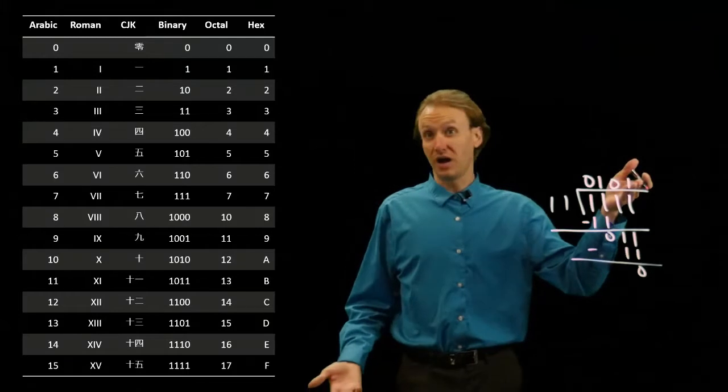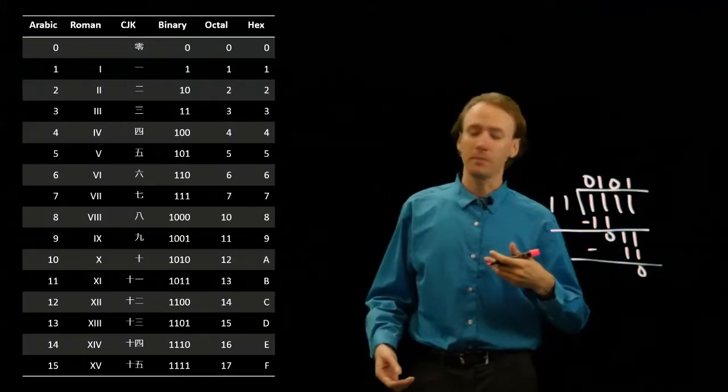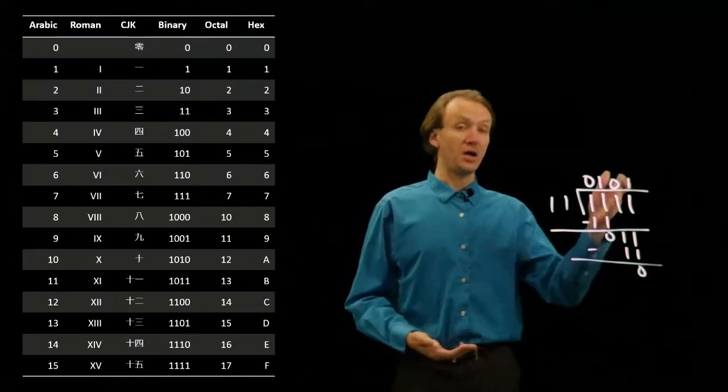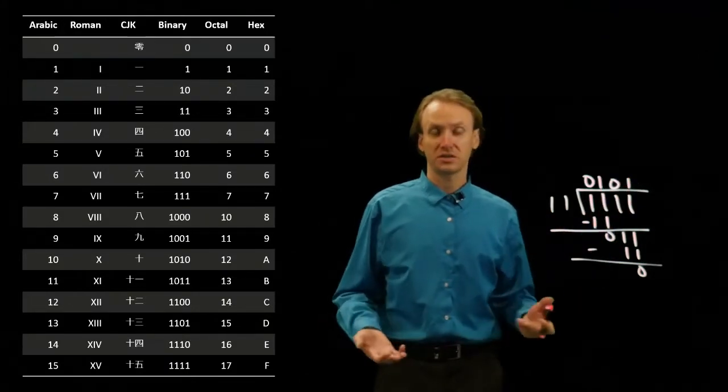Hopefully this is 5 and if I look at my number line I do see 5 over there. So 15 divided by 3 gives me 5 in binary, which is exactly what we'd expect.